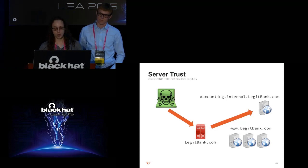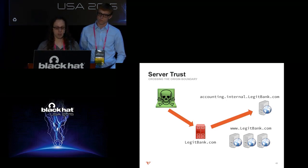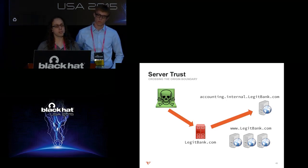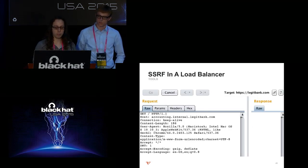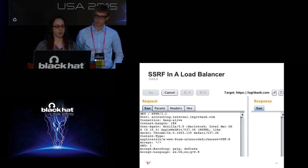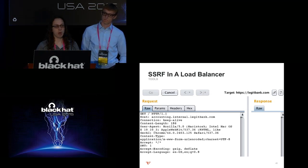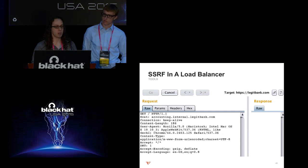What else can we do? legitbank.com was running an NGINX pass-through proxy load balancer routing by hostname and path to internal services. Giving it www.legitbank.com accessed the HTTP server hosting the application. What about accounting.internal.legitbank.com? Using Burp Repeater we established an HTTPS connection to legitbank.com's public IP, then changed the Host header to accounting.internal.legitbank.com — and it gave us access. This endpoint was a RESTful web service with a trivial username and password. On its internal network it was segregated and not expected to be exposed remotely. Literally, this service allowed us to move funds between accounts.